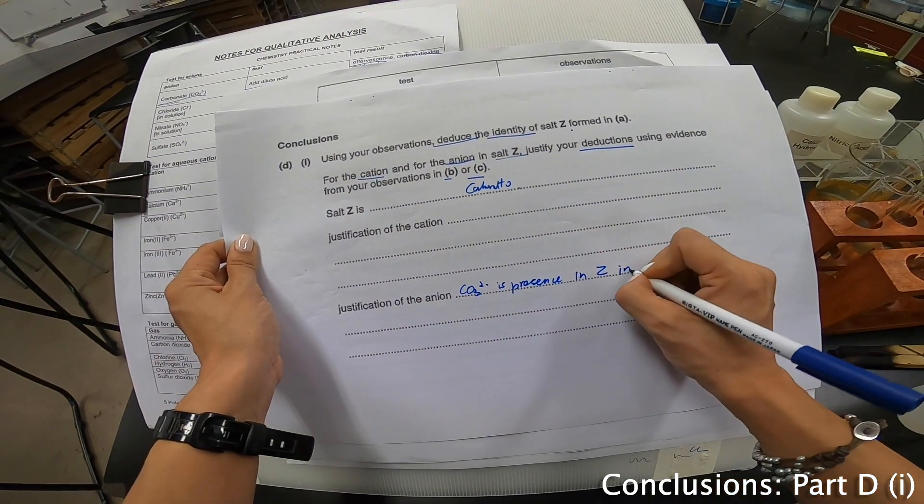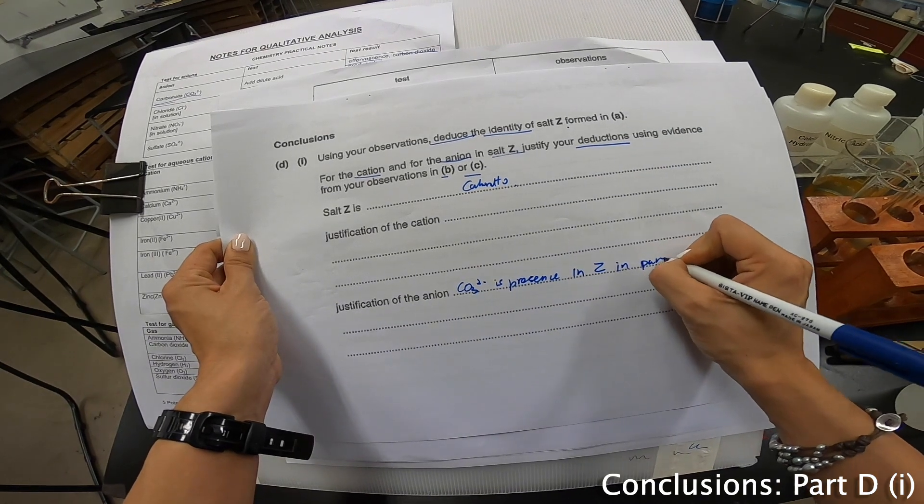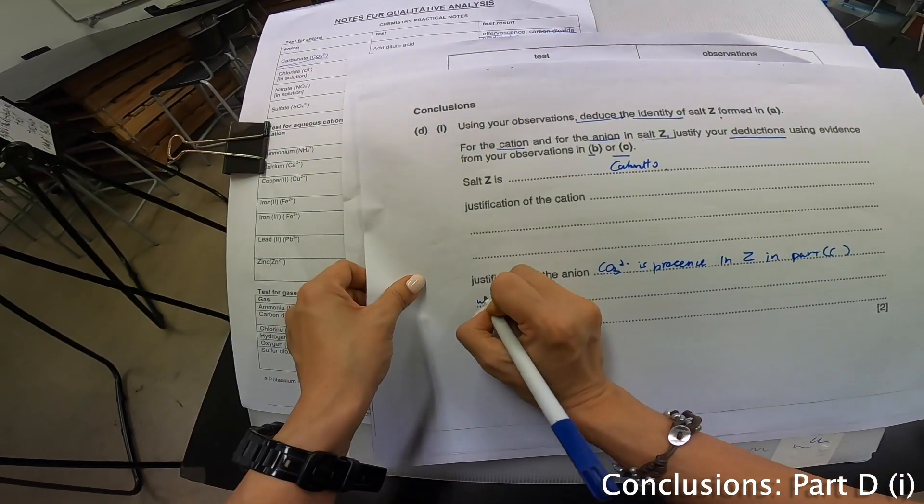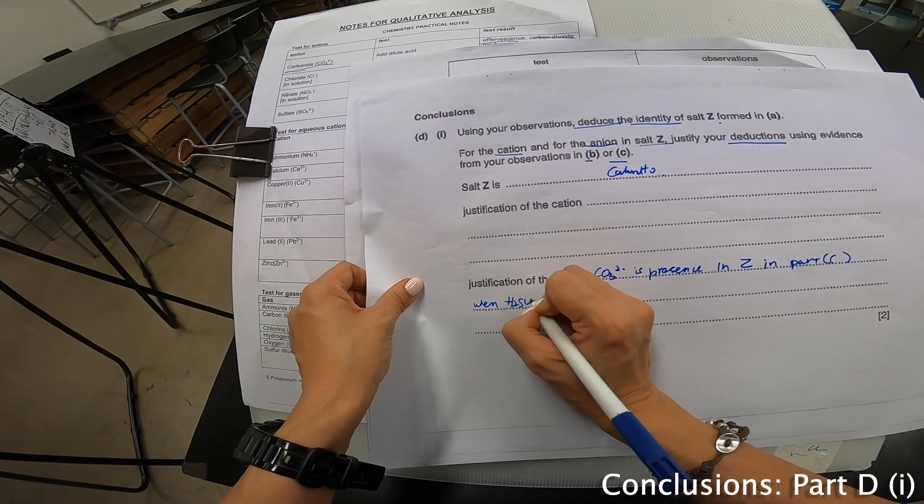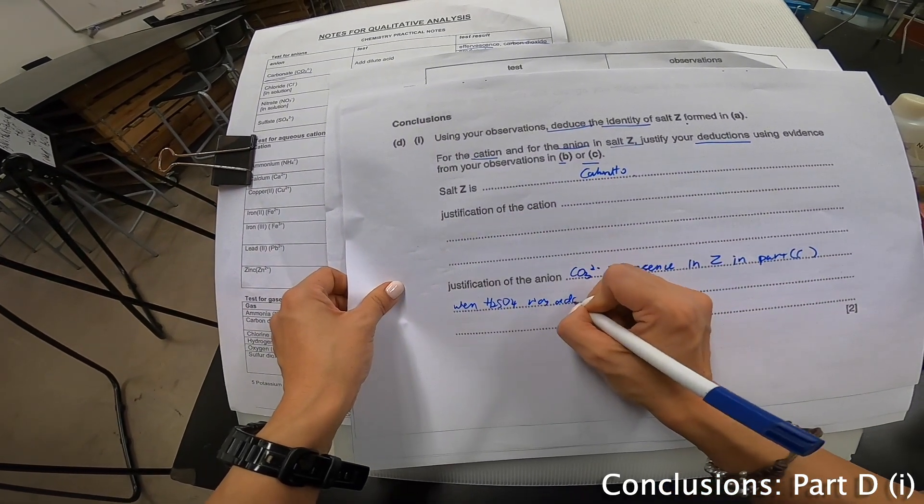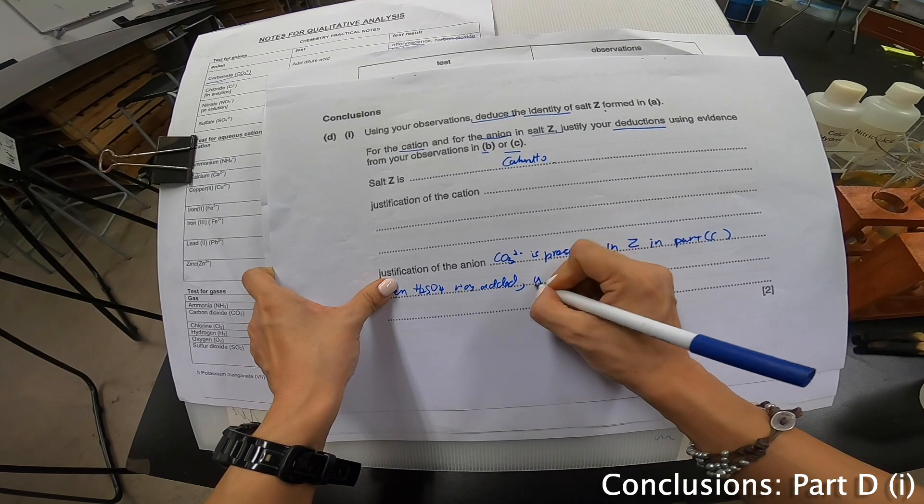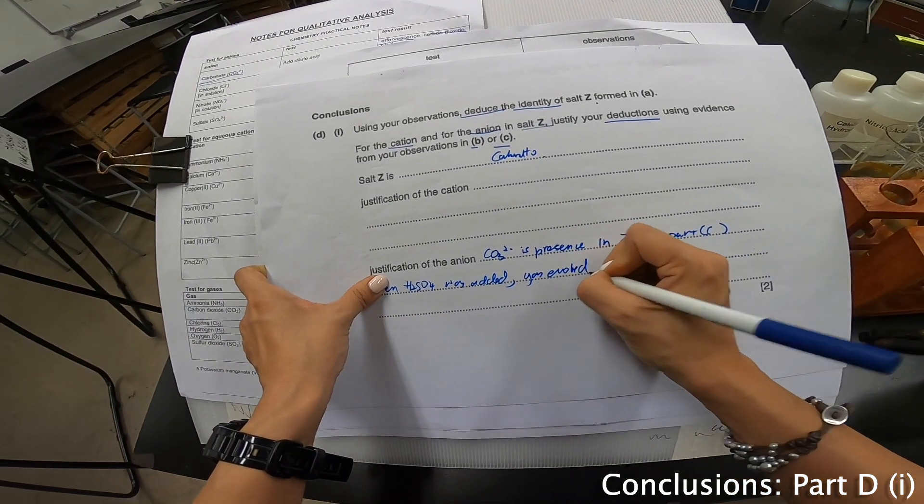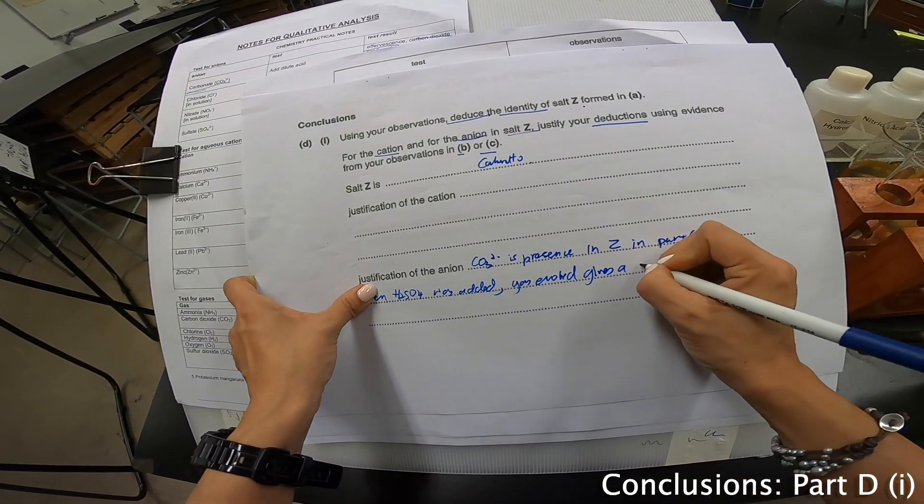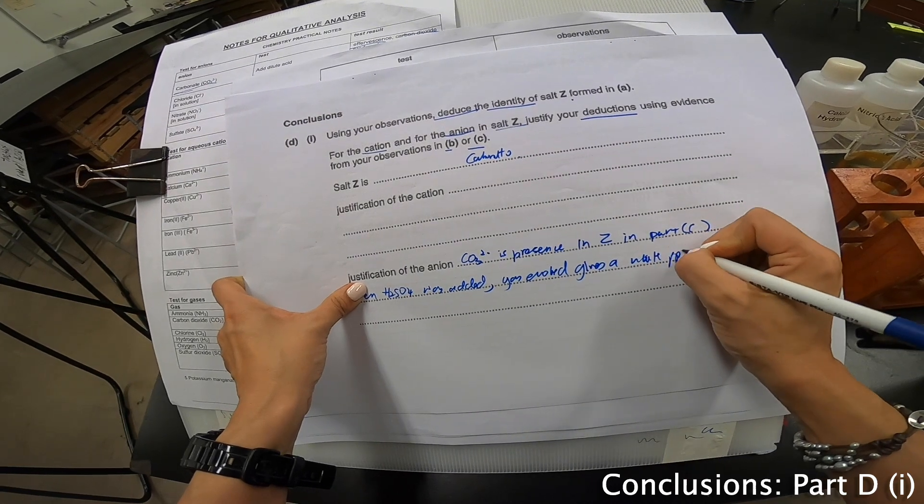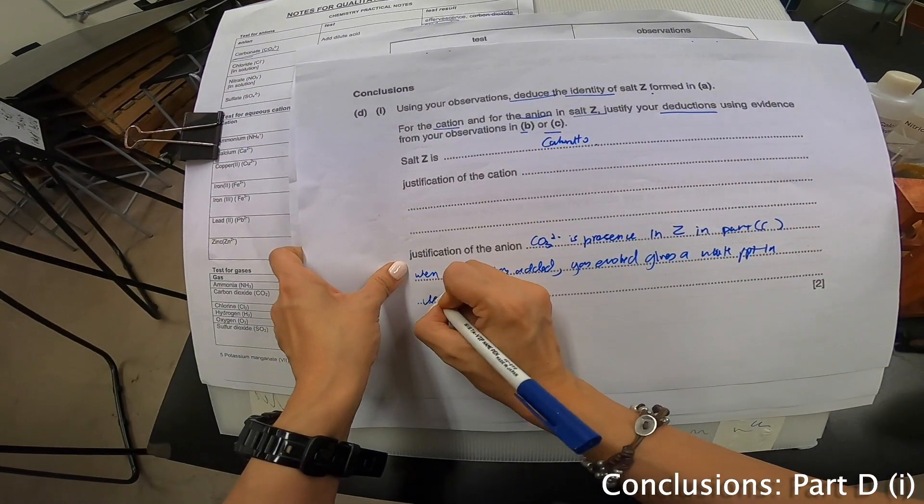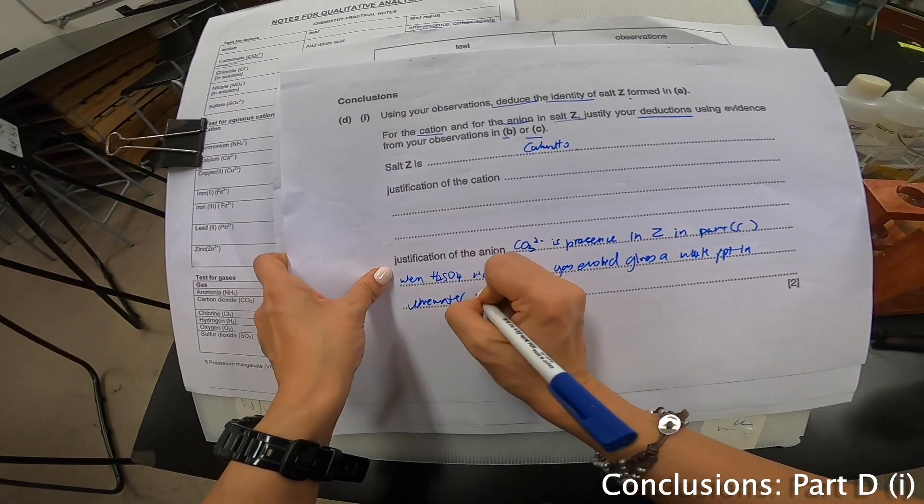In part C, when H₂SO₄ was added, gas evolved, gave a white PPT in lime water.